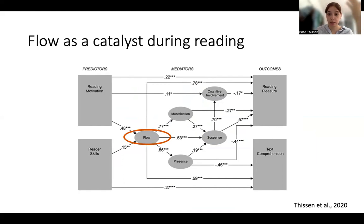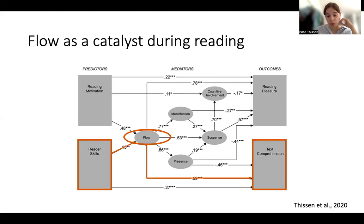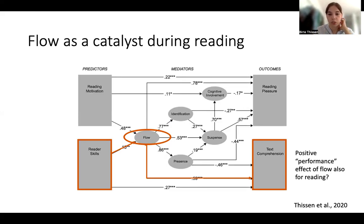The way I see flow during reading is that it's a catalyst for other experiential phenomena that can occur during reading but are more text-specific — for instance, identification with characters, which doesn't happen with every text, but if you get into a flow state during reading it becomes far more likely. In a 2020 paper, my colleagues and I found evidence for this. Importantly, we also found evidence that flow might mediate between the reader's general skill level and the text comprehension they show after reading, suggesting a positive performance effect of flow.